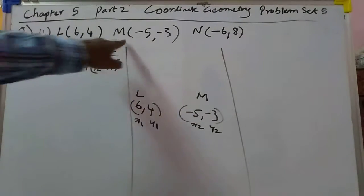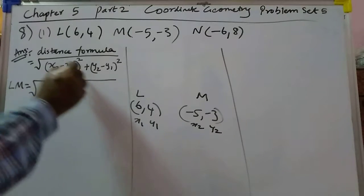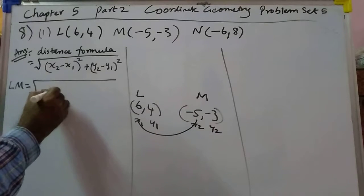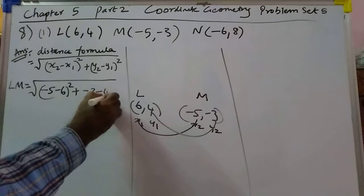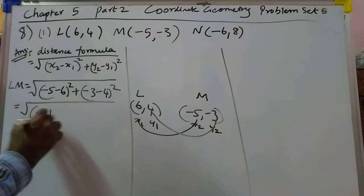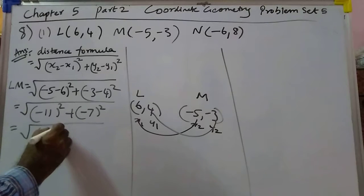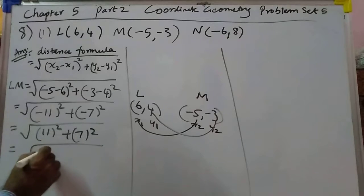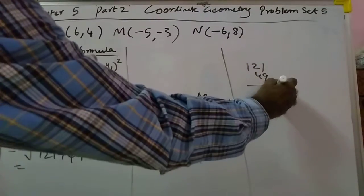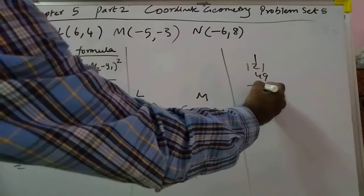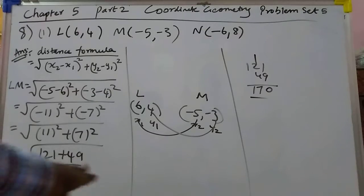First we will calculate LM. LM = (x2 - x1) over (y2 - y1), that is (minus 3 minus 4) over (minus 11 over square minus 7 over square). So this is LM, keep it like this. Now let us calculate MN and LN.